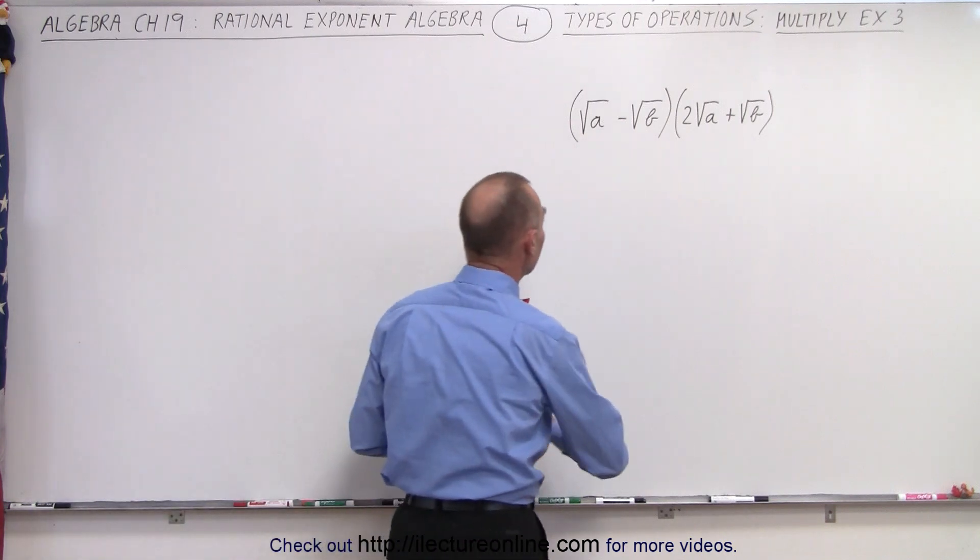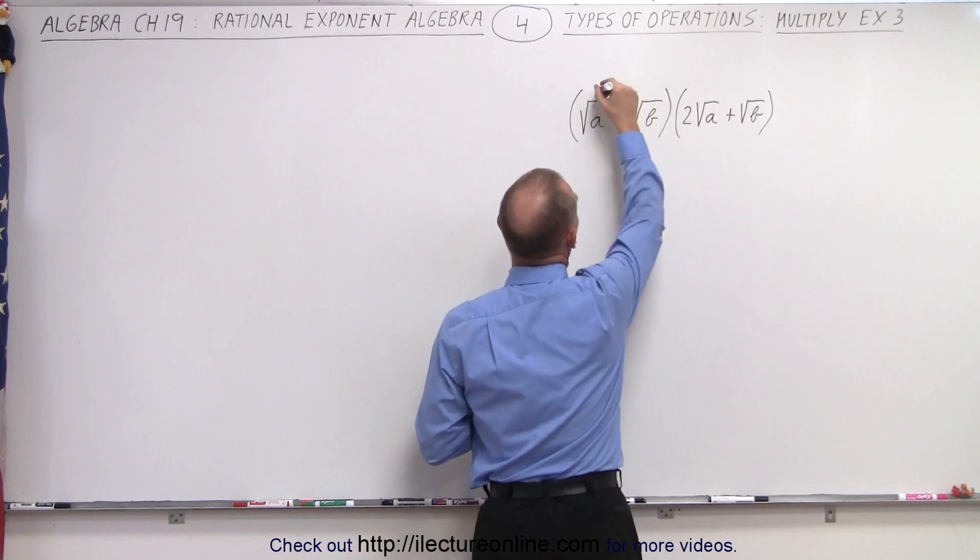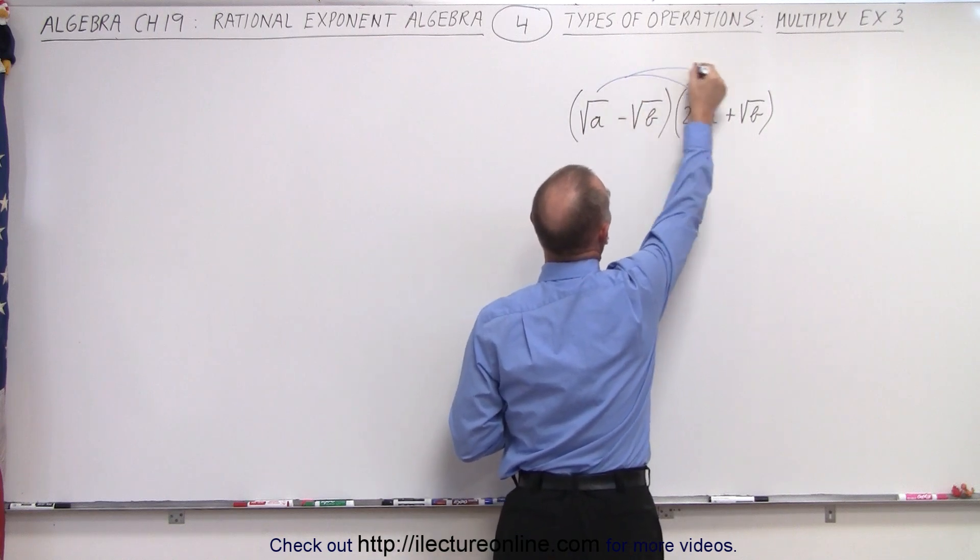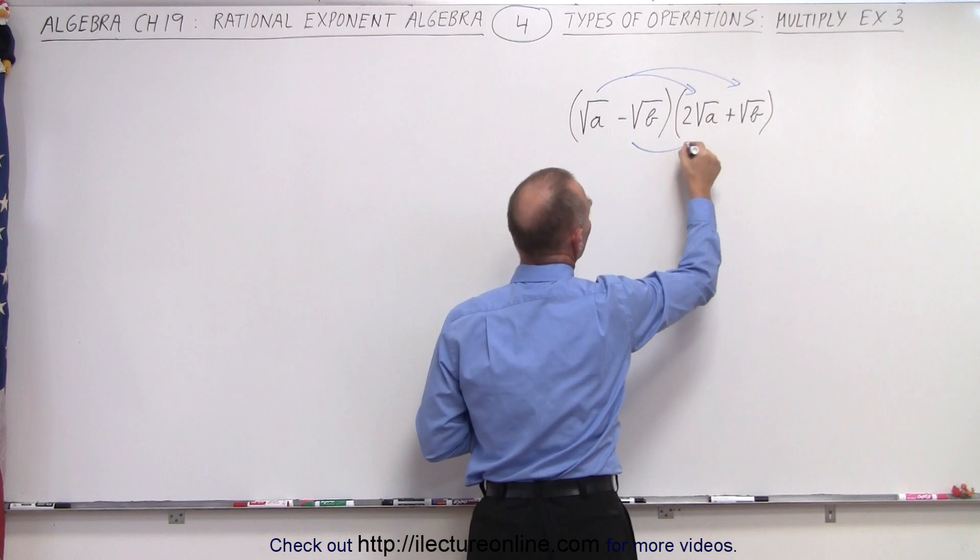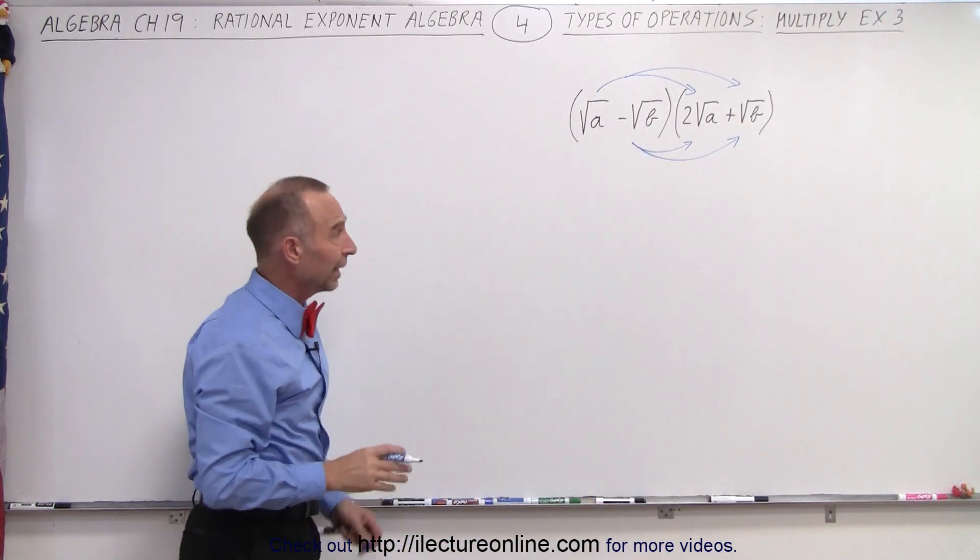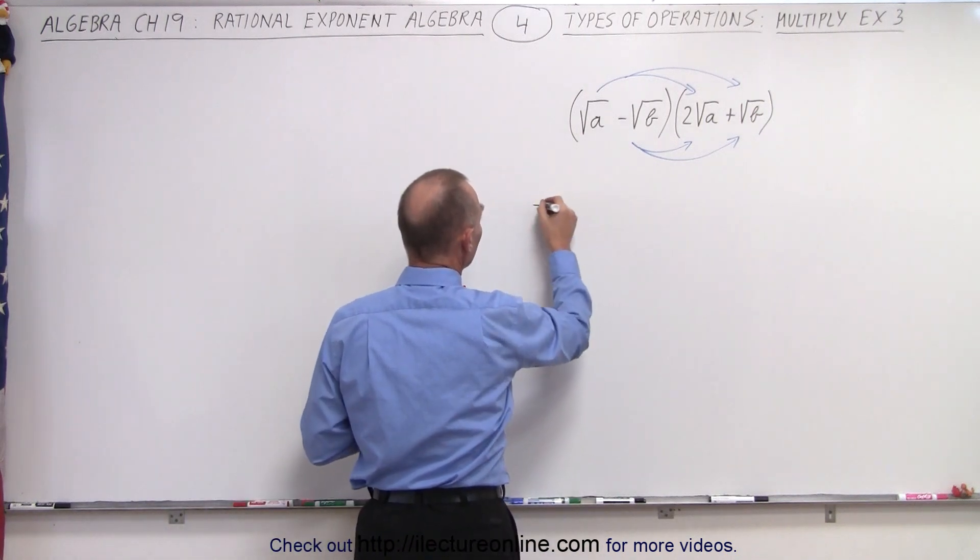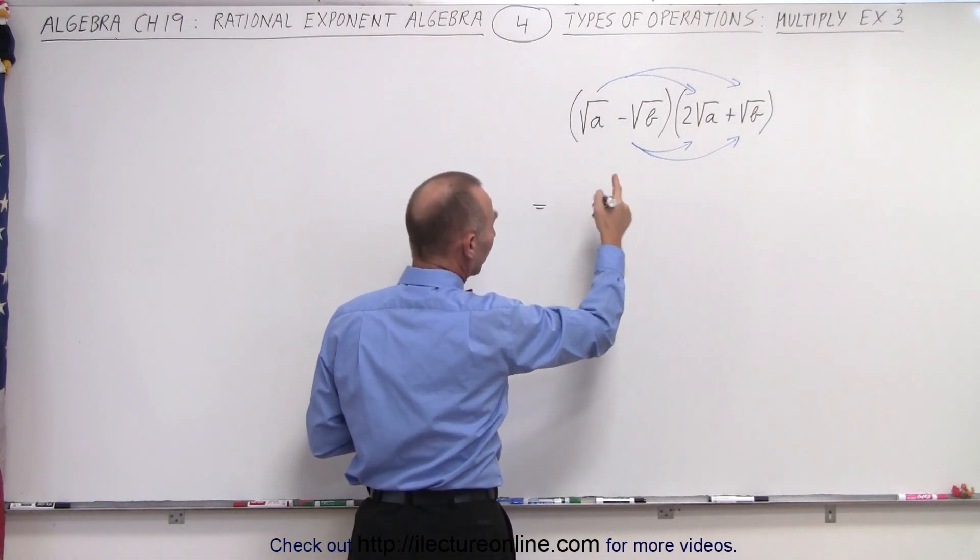We have two binomials multiplied together. We take the first term of the first binomial and multiply it times each of the two terms in the second binomial. Then we grab the second term in the first binomial and again multiply it times each of the two terms in the second binomial. We're simply going to write the multiplication.